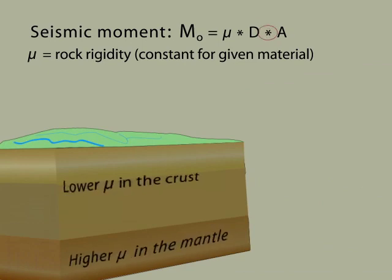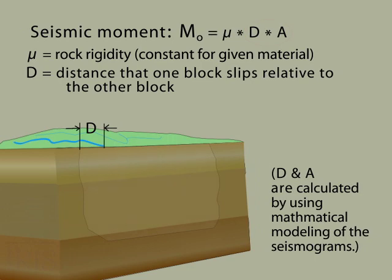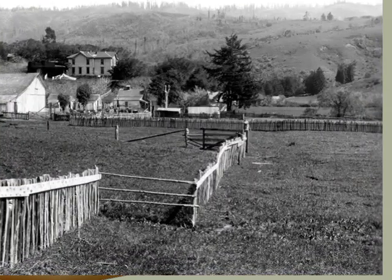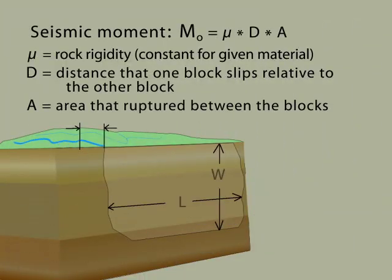In most cases, distance and area can be determined by mathematical modeling of seismograms. D is the distance that the rock slipped along one side of the fault zone relative to the other side — in the 1906 San Francisco earthquake, this fence line was offset over 3 meters. A is the estimated area of the fault zone along which the rock slipped the distance D; it defines the area that actually ruptured during the earthquake.